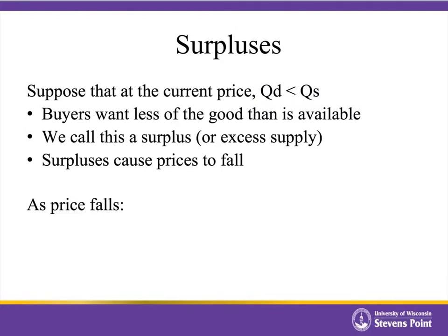As the price falls, when we move along the demand curve, at a lower price we're willing to buy more product, and we see that quantity demanded has increased. And at the lower price, sellers are not receiving as much profit per unit, and so we see quantity supplied decrease as we move along the supply curve. The surplus starts becoming smaller and smaller.